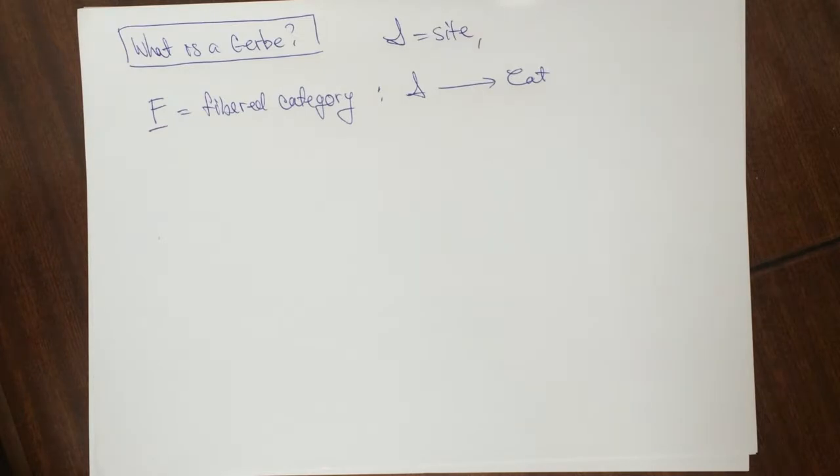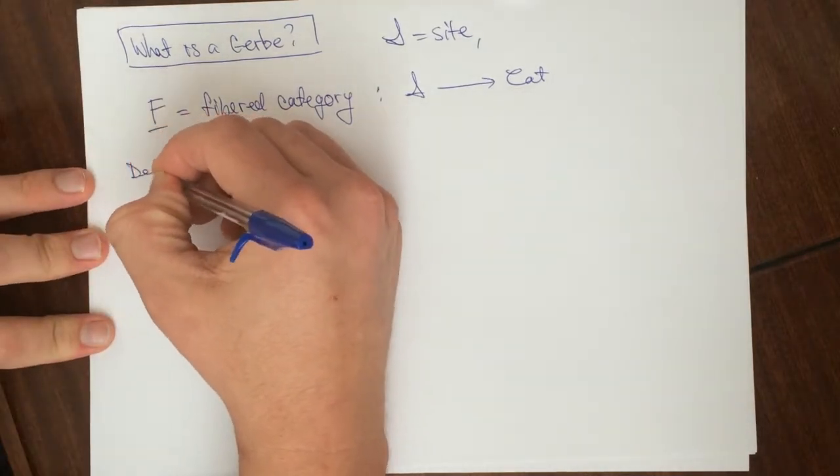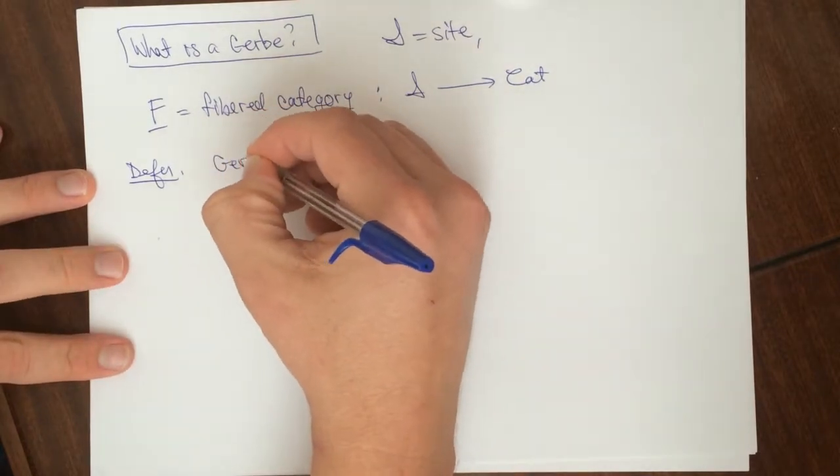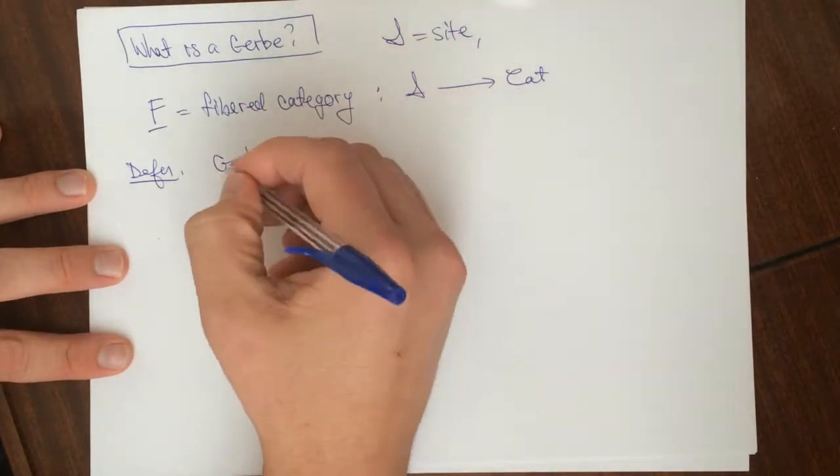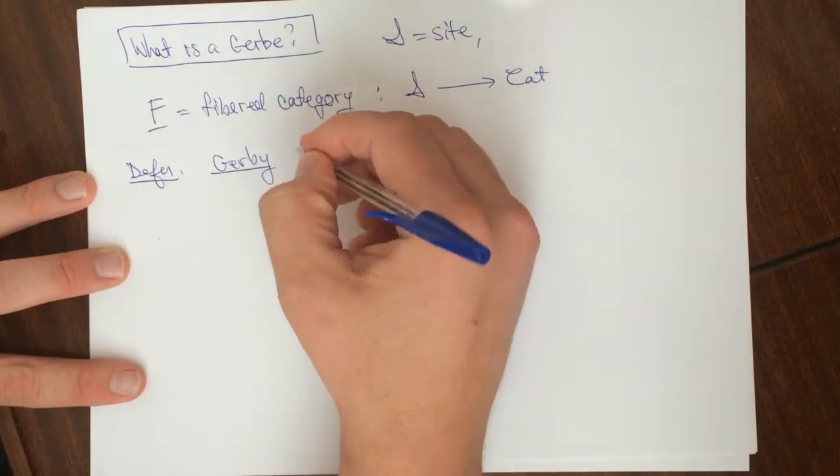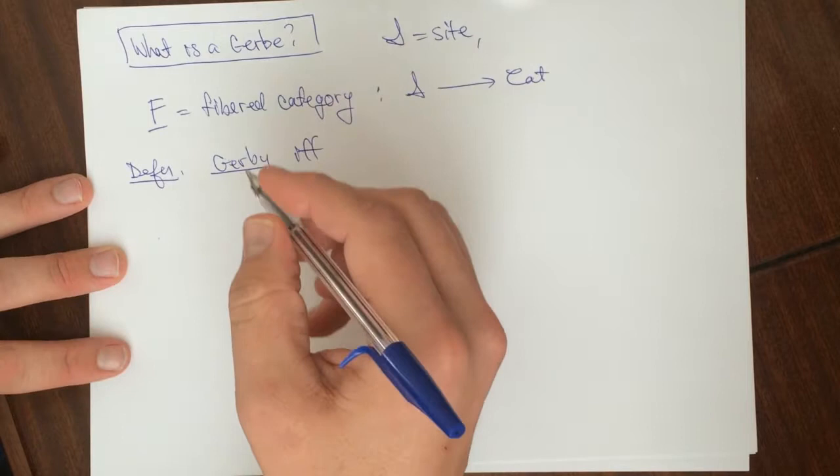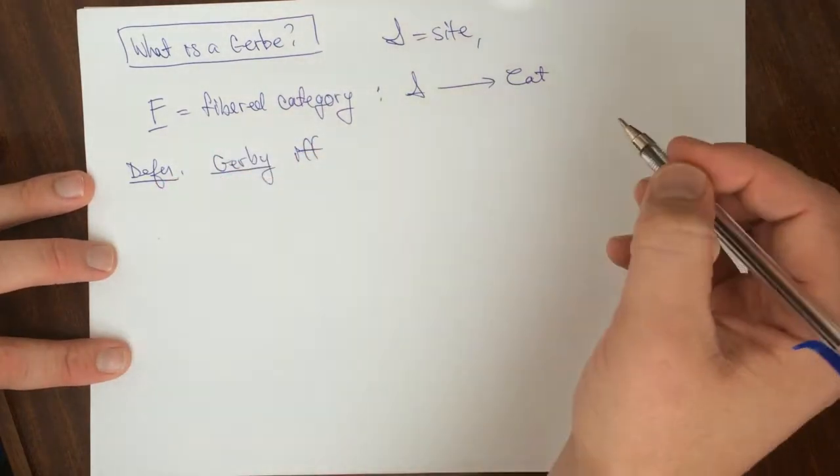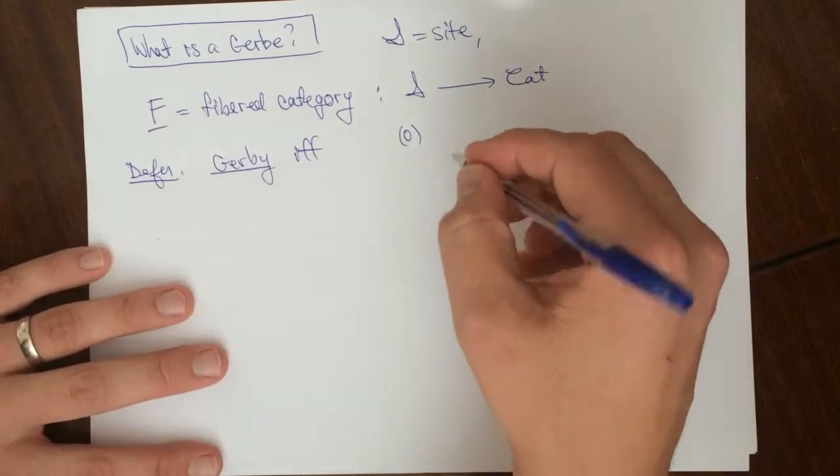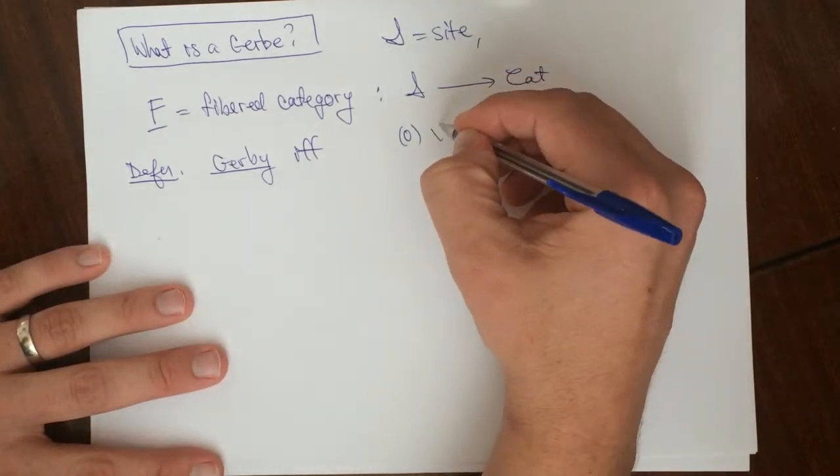Okay, so I'm going to make a definition of gerb. Okay, so F is, so the fibered category is a gerb if and only if it satisfies three properties. So the first property, or the zeroth property, it has values in groupoids.